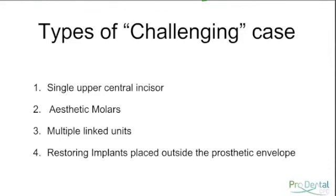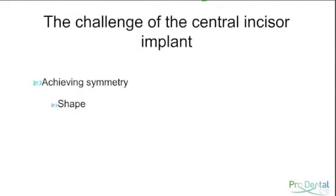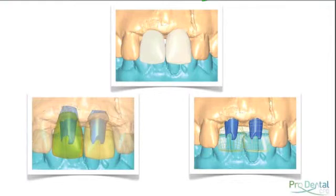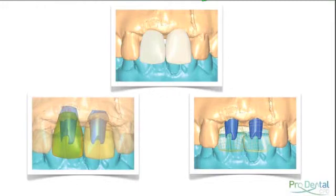The real issue with the central incisor is getting the aesthetics right and achieving symmetry with the adjacent central incisor, which is partly dictated by shape. The VAD software helps enormously with getting the shape right because we're designing from an idealised wax-up. When we have a single central incisor missing, we can ask the software to produce a mirror image of the adjacent central incisor, which greatly helps in planning and achieving a symmetrical shape.